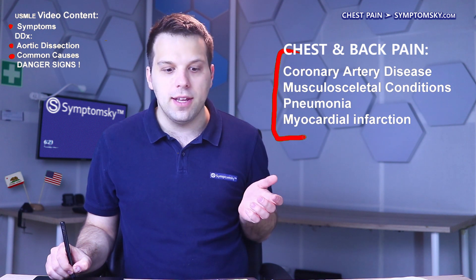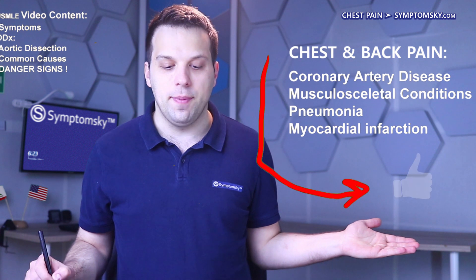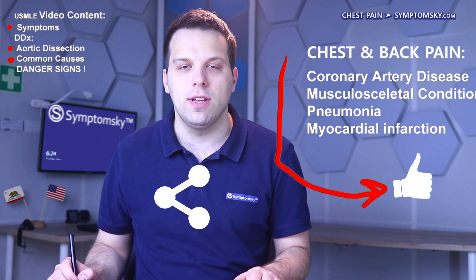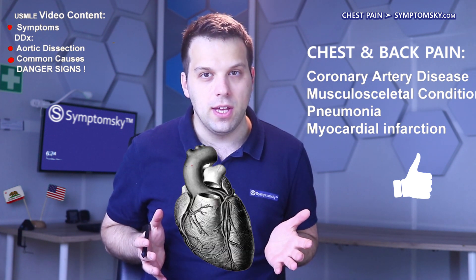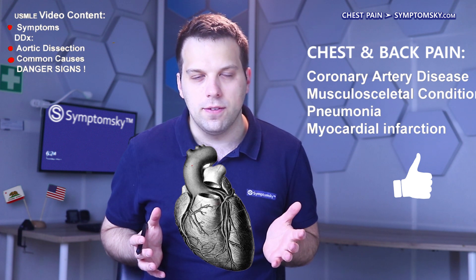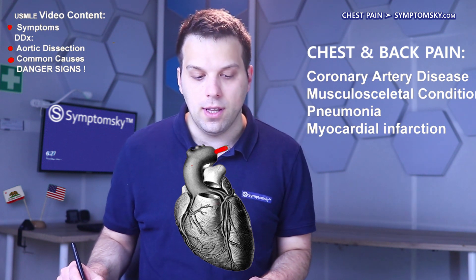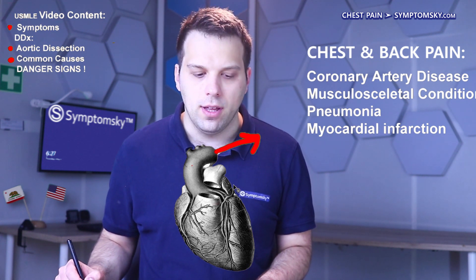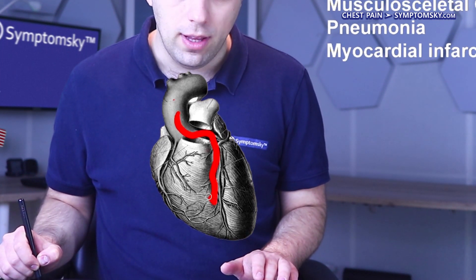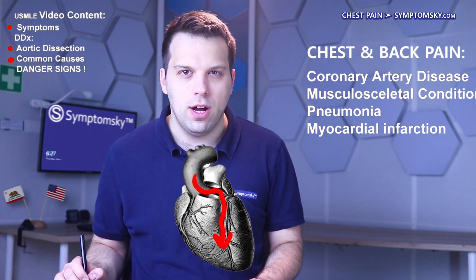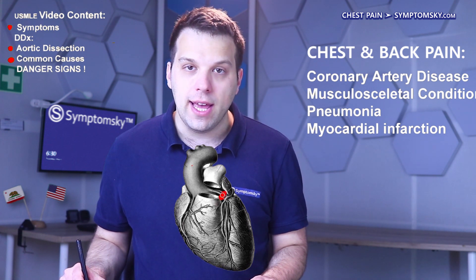The heart is a muscle and it has to pump a lot of blood through the aorta. If we look closely, we can see that there are arteries leaving the aorta in order to supply the heart with fresh oxygenated blood so it can function properly.